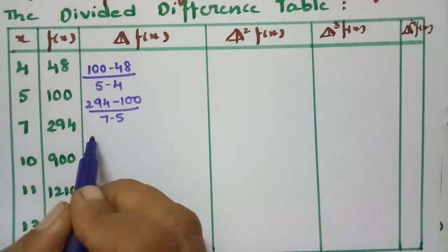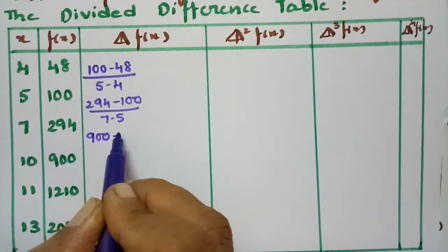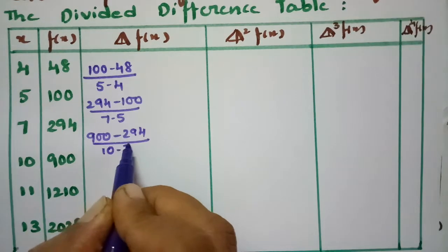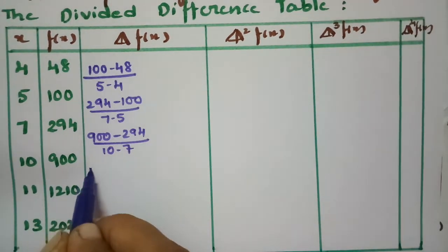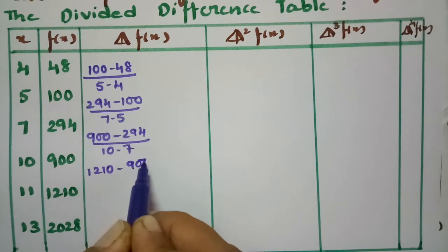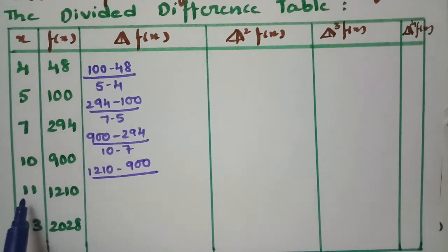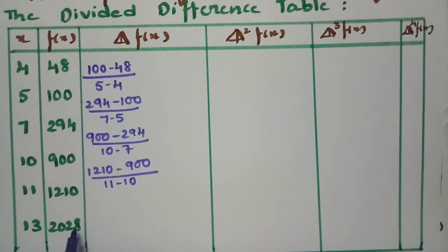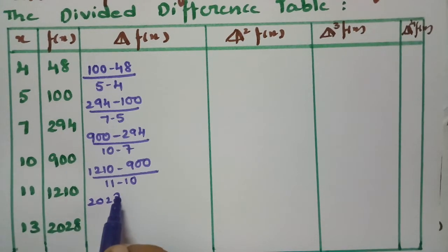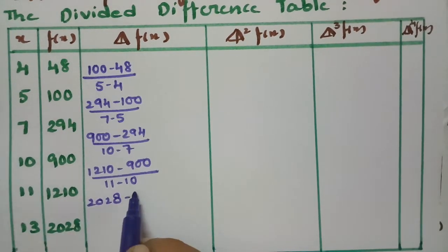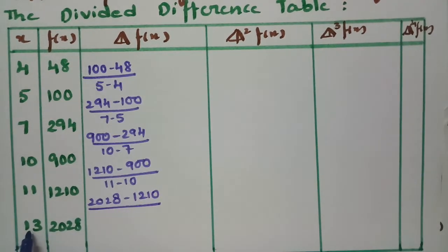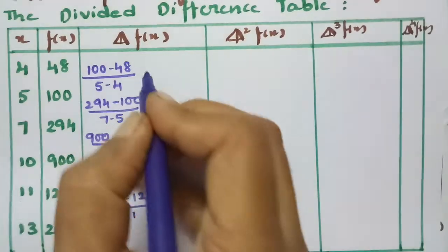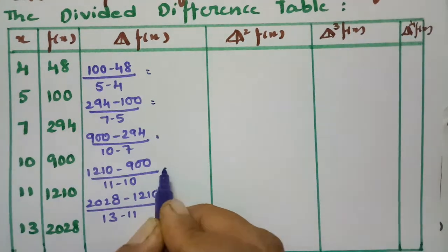The next entry is 294 minus 100 divided by 7 minus 5. After that, 900 minus 294 divided by 10 minus 7. Then 1210 minus 900 divided by 11 minus 10. And finally, 2028 minus 1210 divided by 13 minus 11. These are all the first divided differences we need.